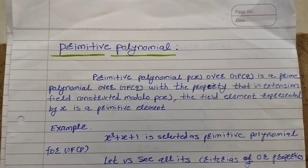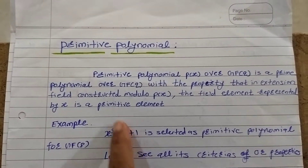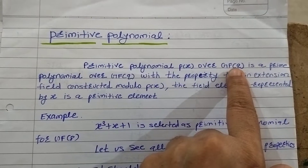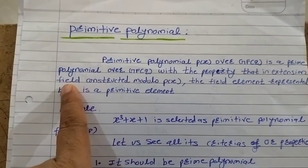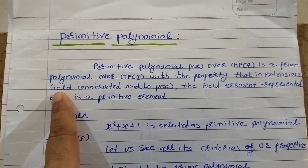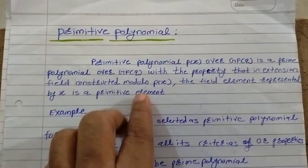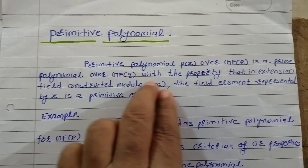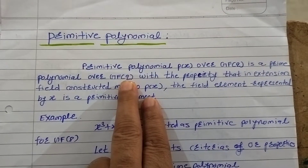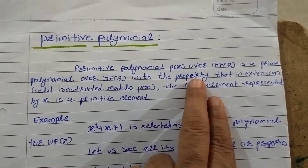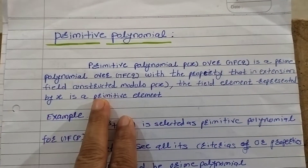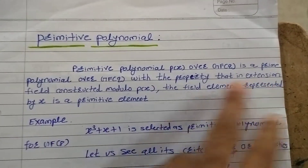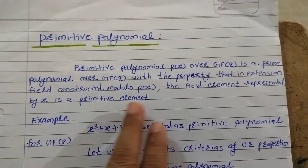So what is the definition? A primitive polynomial p(x) over GF(q) — where GF(q) is a Galois field and q is prime — is a prime polynomial over GF(q), with the property that in the extension field constructed modulo p(x), the field element represented by x is a primitive element.